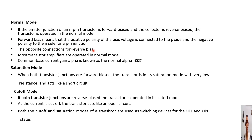Reverse bias is the vice versa. Transistors operated in normal mode are mainly used for amplification, and the common base current gain is denoted as alpha_N. In saturation mode, both the emitter-base and collector-base junctions are forward biased, giving very low resistance — acting like a short circuit. In cutoff mode, both junctions are reverse biased, acting like an open circuit. Both cutoff and saturation modes are used for switching applications.